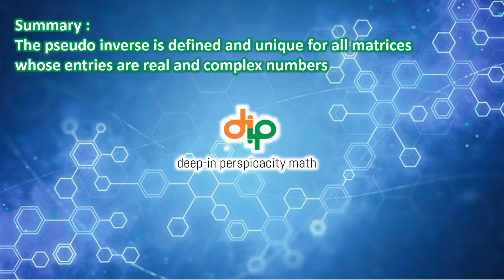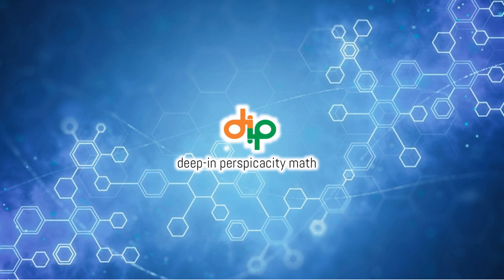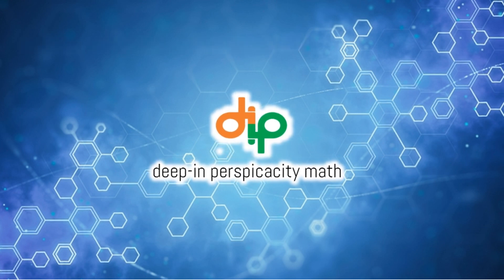Overall summary, the pseudo inverse is defined and unique for all matrices whose entries are real or complex numbers. That's all. Keep learning and be enlightened. Thank you for watching, and do not forget to share this video. See you next time.